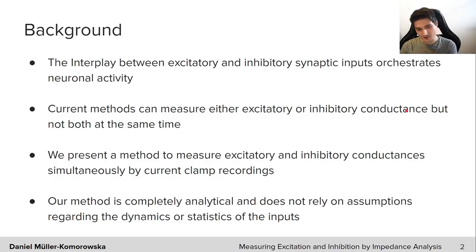As a brief background, the interplay between excitatory and inhibitory synaptic inputs orchestrates neuronal activity. Current methods can measure either excitatory or inhibitory conductances, but not both. We present a new method to measure excitatory and inhibitory conductances simultaneously by current clamp recordings. Our method is completely analytical and does not rely on assumptions regarding the dynamics or statistics of the inputs.